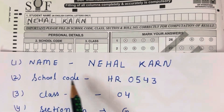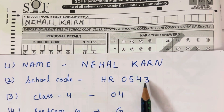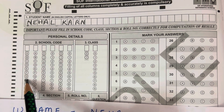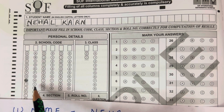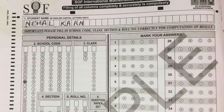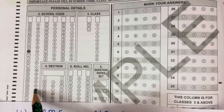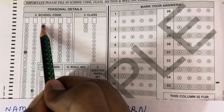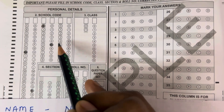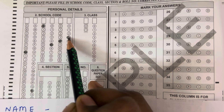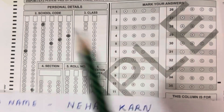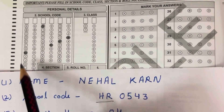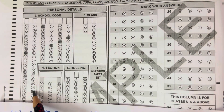The second field is school code. Suppose your school code is HR0543. You will fill H and R first — these two letters are your state code. Then you fill the remaining digits 0543 in the corresponding boxes.